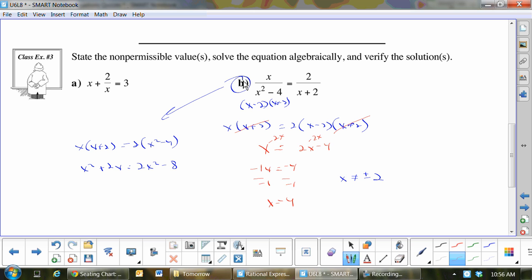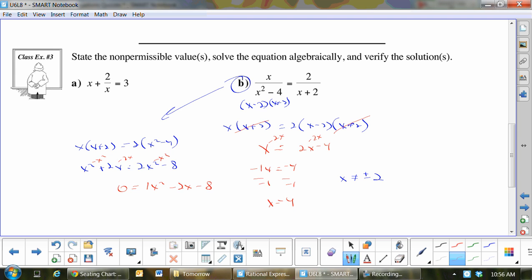This will be x squared plus 2x equals 2x squared minus 8. Let's get everything on the right side. So I want 0 on the left. I'm going to minus x squared minus x squared. I will minus 2x as well. So that will be 0 equals 1x squared minus 2x minus 8.